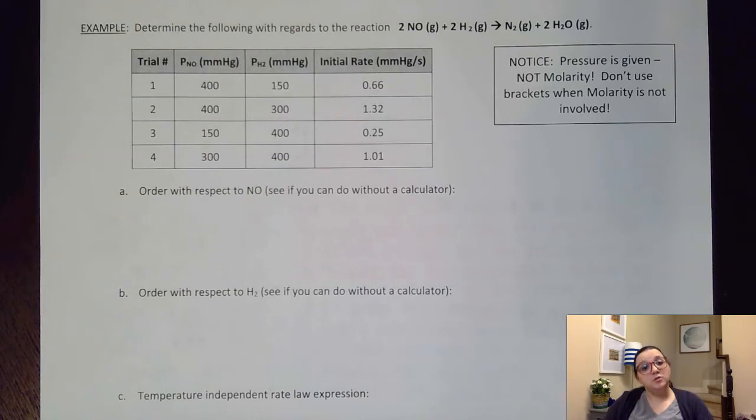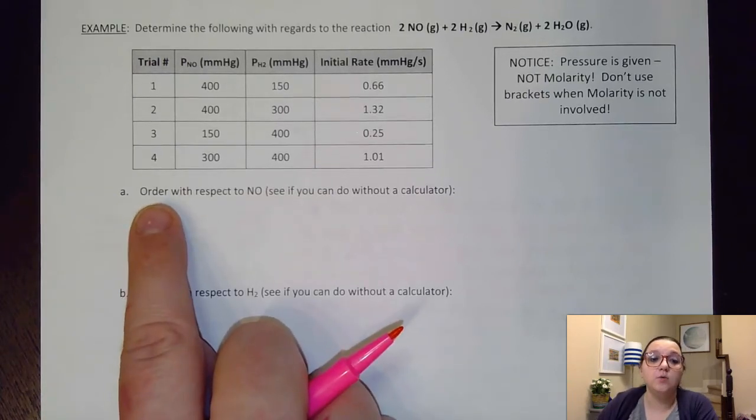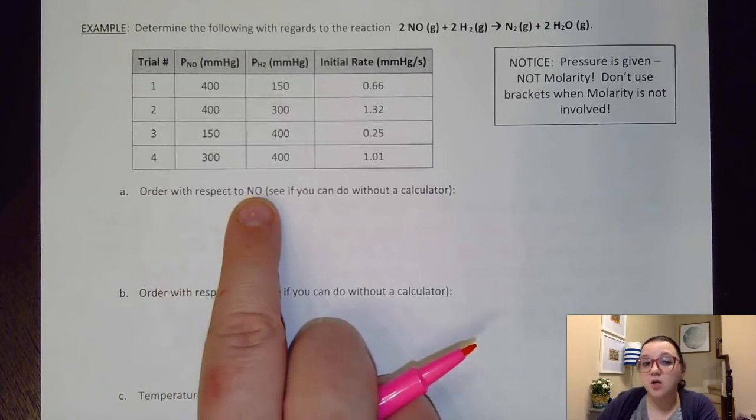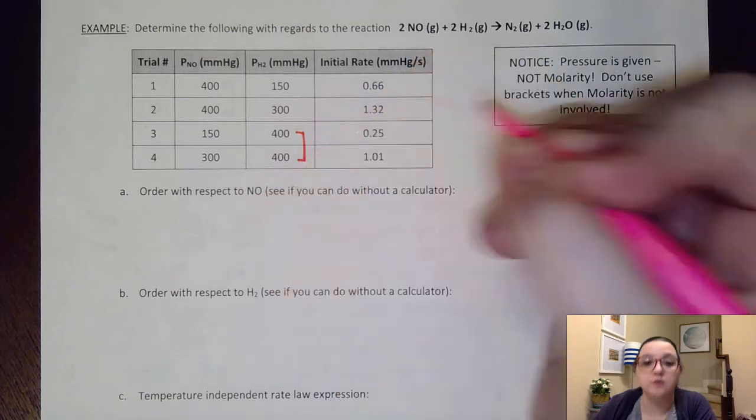All right, so what I'm going to do is I'm going to first kind of think about this problem without necessarily writing down any math. Obviously, sometimes these problems could be in the multiple choice part of the AP test. And if it was, I would want to be able to do it without a calculator. And so what I can start to do is kind of see what the numbers are doing each time I'm making these changes. So for example here, let's say I wanted to pick the order with respect to NO. Well, to solve NO, I would need to pick two trials where H2 remains the same. I see that H2 remains the same on trials three and four.